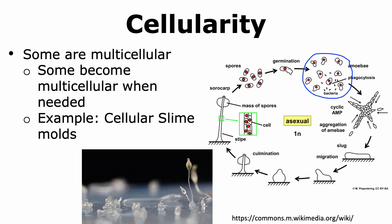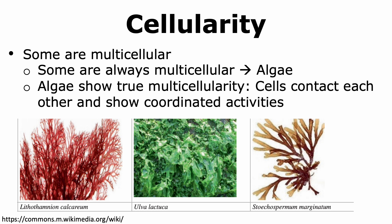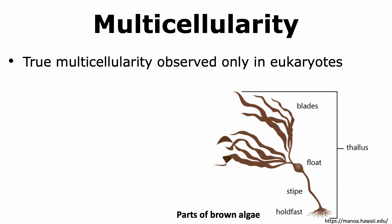Here is a picture that shows different stages of the formation of the fruiting bodies in Dictyostelium. Some protists are always multicellular, like algae. In fact, algae show true multicellularity. True multicellularity is observed when the cells are able to contact each other and show coordinated activities. True multicellularity is observed only in eukaryotes.